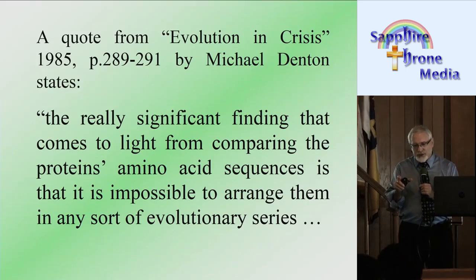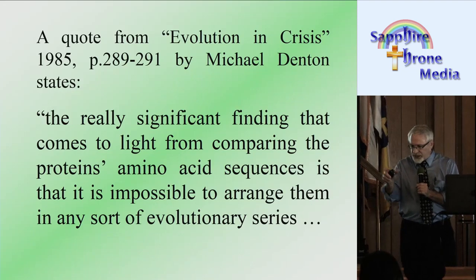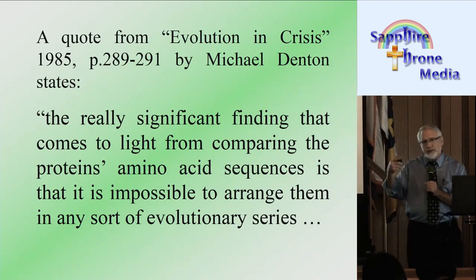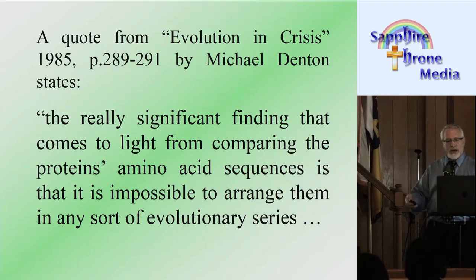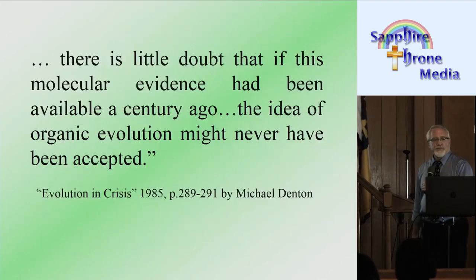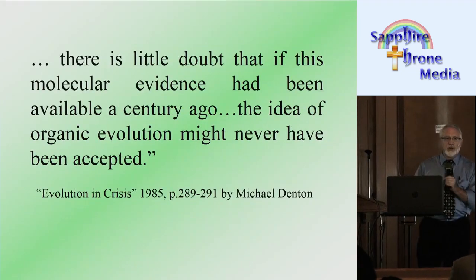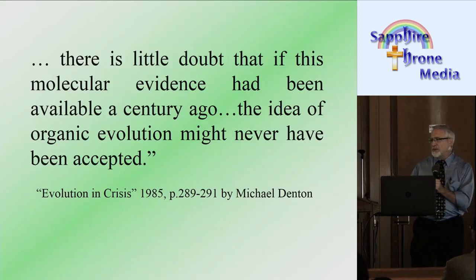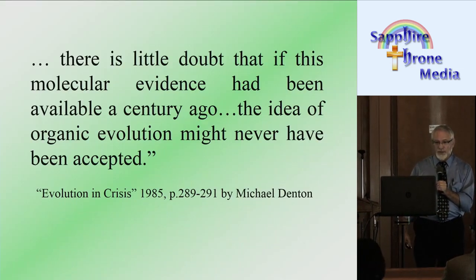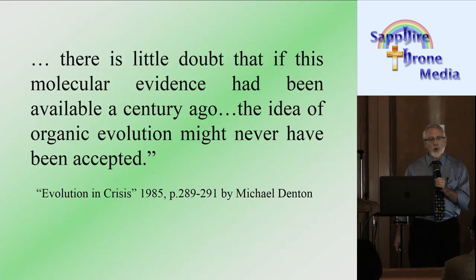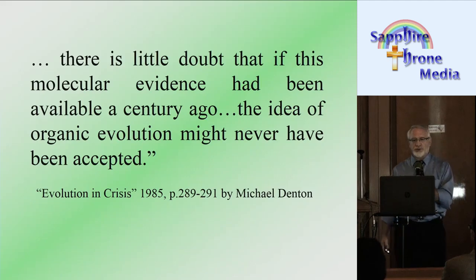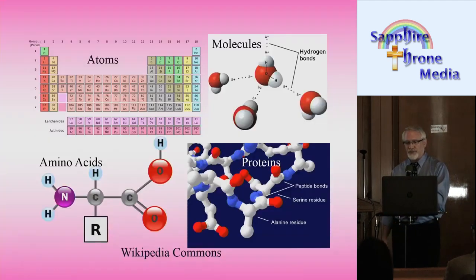In other words, scientists can't look at the proteins and say logically that this one came first, this one came second, and so on — they just can't do that. There is little doubt that if this molecular evidence had been available a century ago, the idea of organic evolution might never have been accepted.